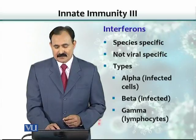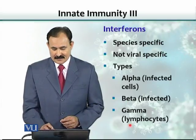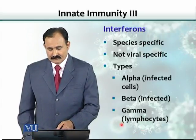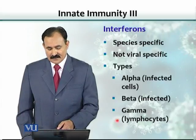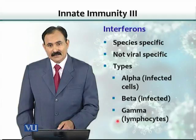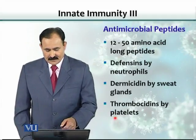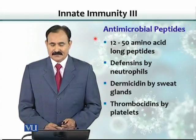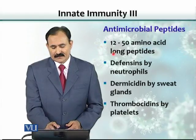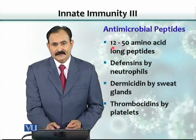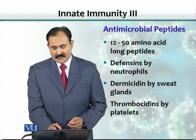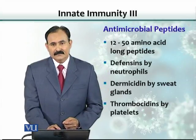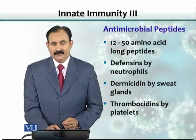There are three types of interferons: alpha, beta, and gamma. Gamma is produced by lymphocytes, and it is used as a treatment in most chronic infections or cancers. Another group of chemicals called antimicrobial peptides are small proteins consisting of 12 to 50 amino acids. Examples include defensins released by neutrophils, dermicidin made by sweat glands, and thrombocidins made by platelets.